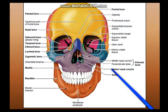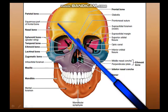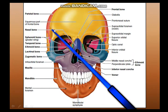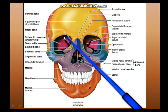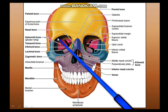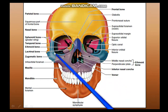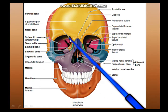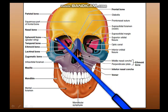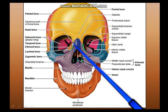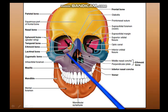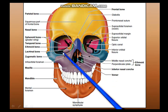Hello everyone, today we are going to study the orbit. This here is a frontal view of the skull and you can see the outline of the orbital margin. The orbital margin is almost quadrangular and it is formed in equal one thirds: one third by the frontal bone, one third by the frontal process of the maxilla, and one third by the zygomatic bone.